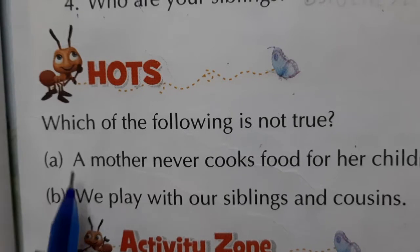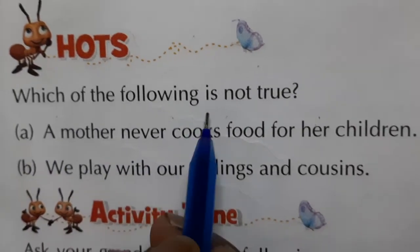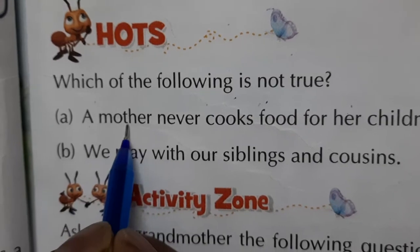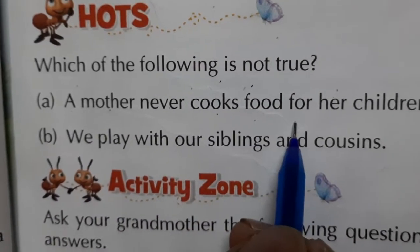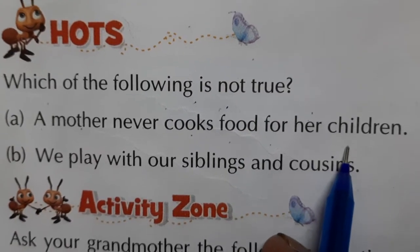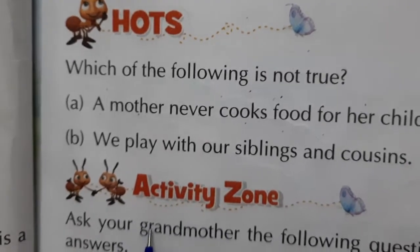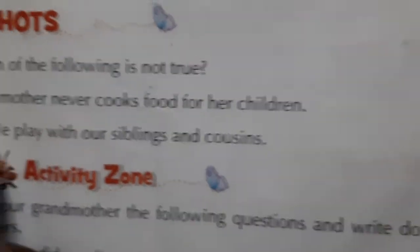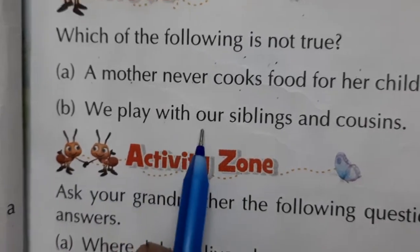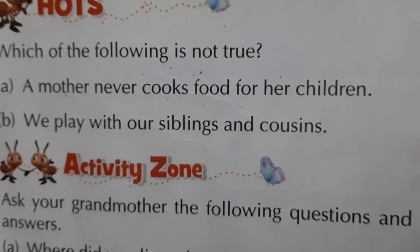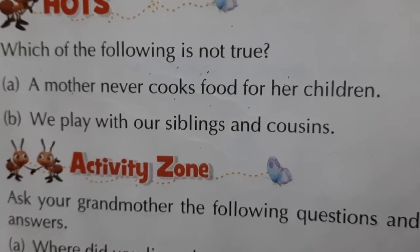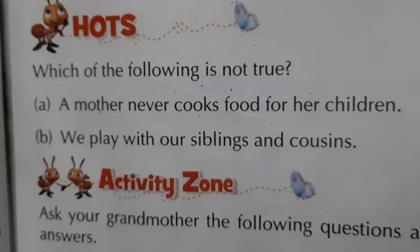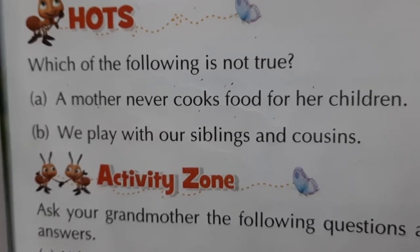Yahan par ek activity hai: which of the following is not true? A) A mother never cooks food for her children — matlab mummy apne bacchon ke liye khaana nahi banati — yeh galat hai. B) We play with our siblings and cousins — hum apne sagey bhai behen aur uncle aunty ke bacchon ke saath khelte hain — yeh sahi hai, so we can tick it as correct.